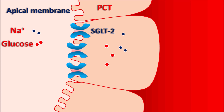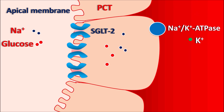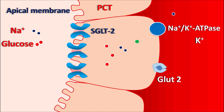For reabsorption of sodium, the sodium-potassium ATPase pump on the basolateral membrane exchanges sodium for potassium, allowing sodium to enter the systemic circulation. For the reabsorption of glucose, GLUT2 receptors on the basolateral membrane allow glucose to enter the systemic circulation. In diabetic patients, this reabsorption increases glucose levels.